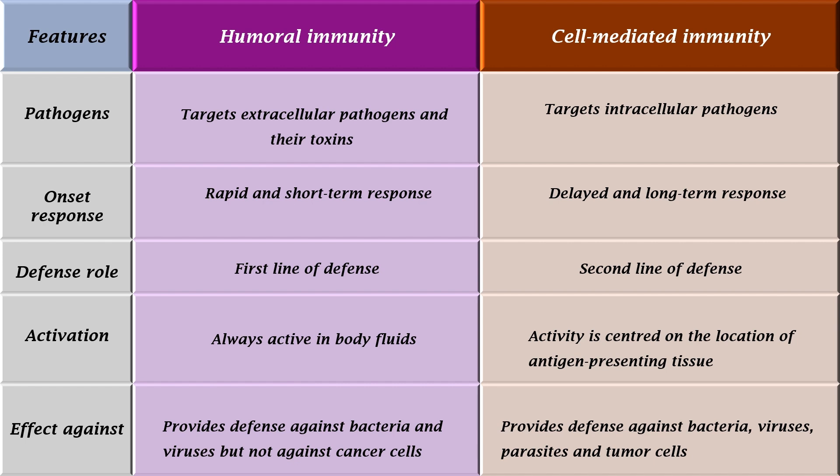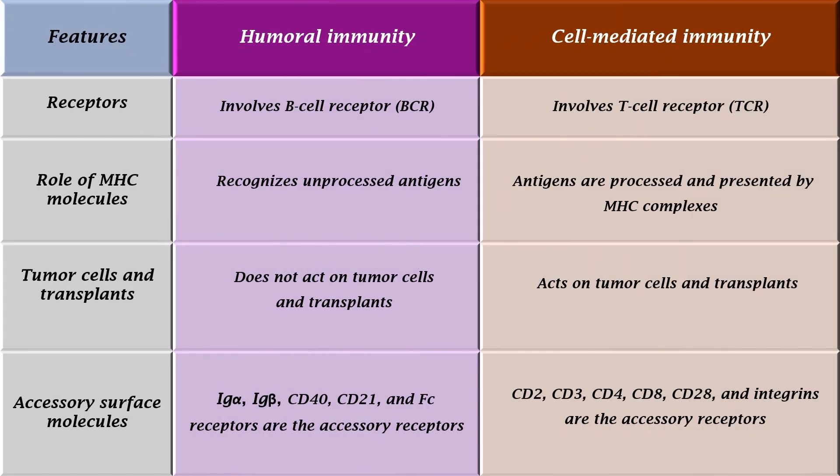Humoral immunity is the first line of defense and is always active in body fluids, but cell-mediated immunity is considered the second line of defense, and its activity is centered on the location of antigen-presenting tissue. Humoral immunity provides defense against bacteria and viruses, but not against cancer cells. Cell-mediated immunity provides defense against bacteria, viruses, parasites, and tumor cells. Humoral immunity does not act on tumor cells and transplants, whereas cell-mediated immunity acts on tumor cells and transplants.